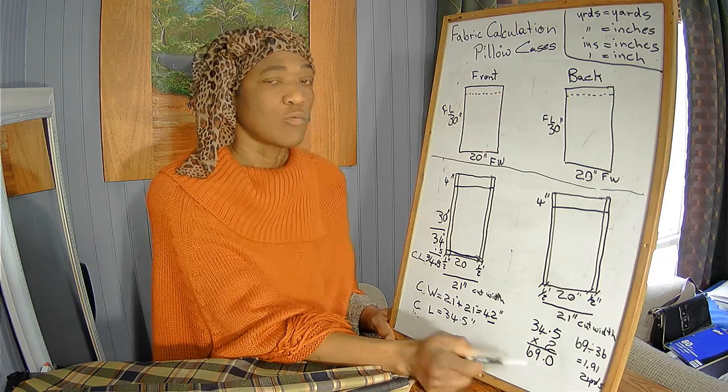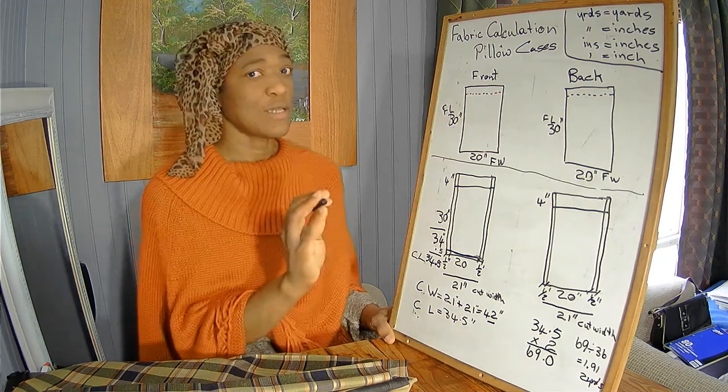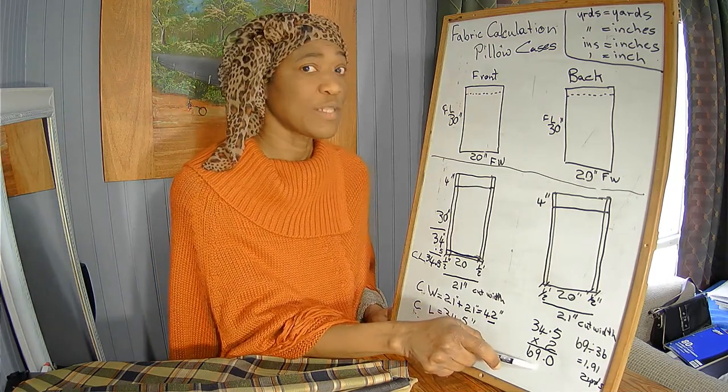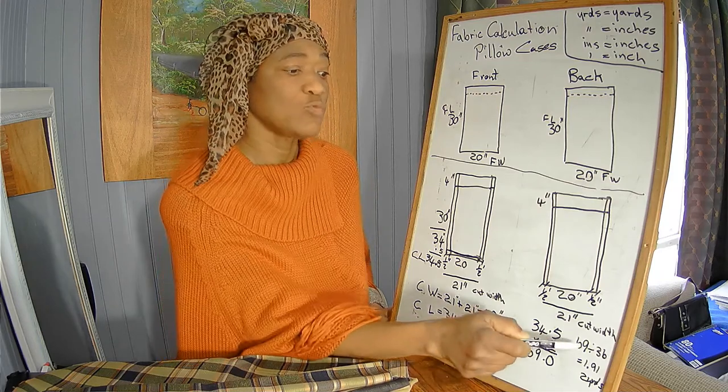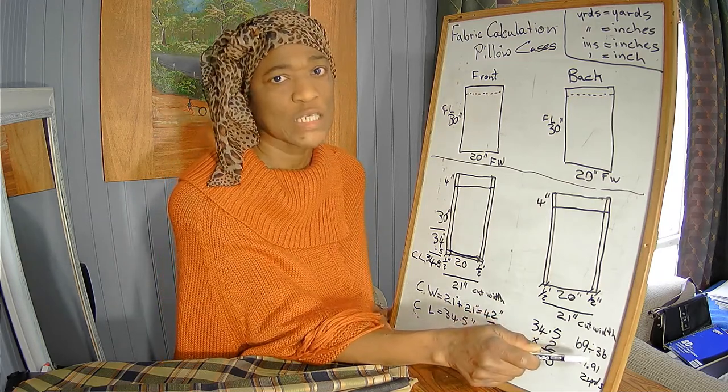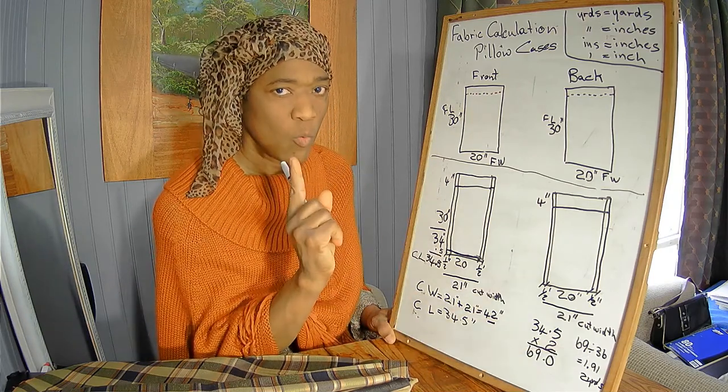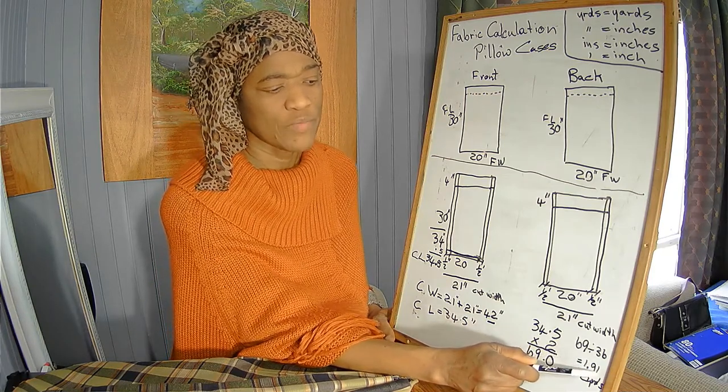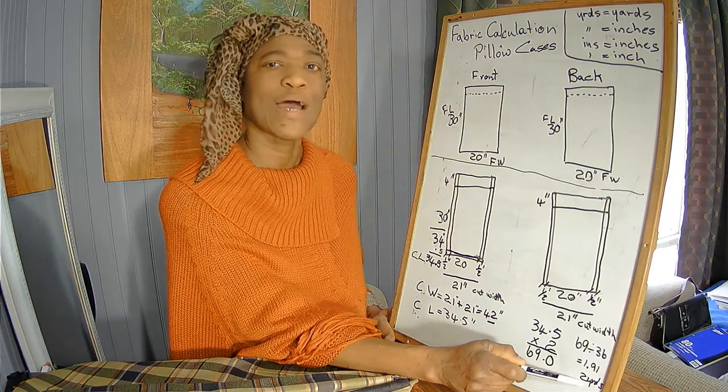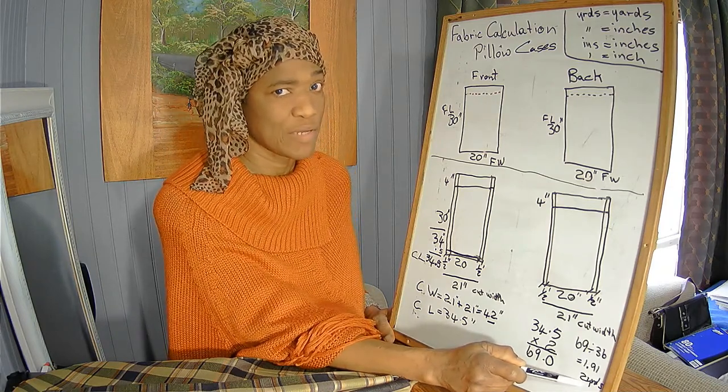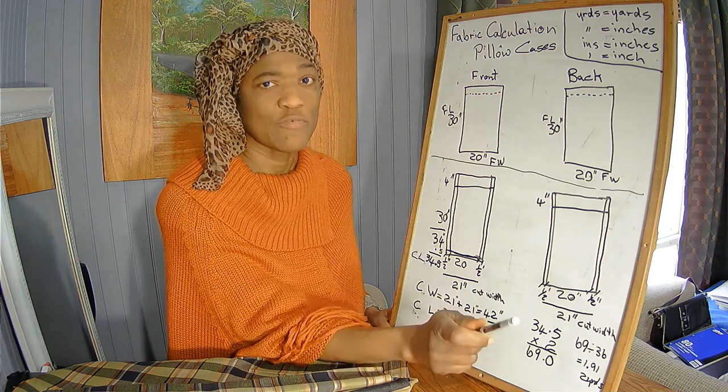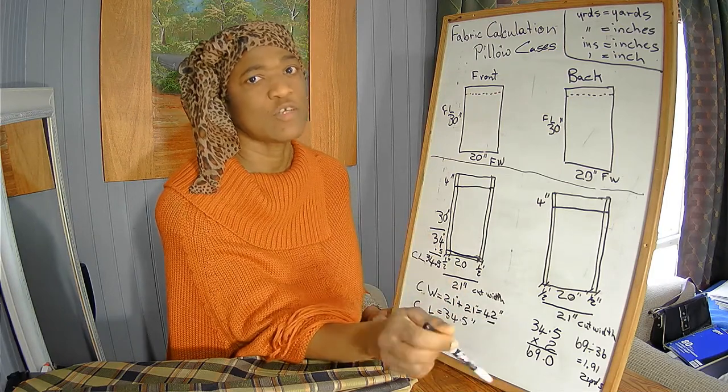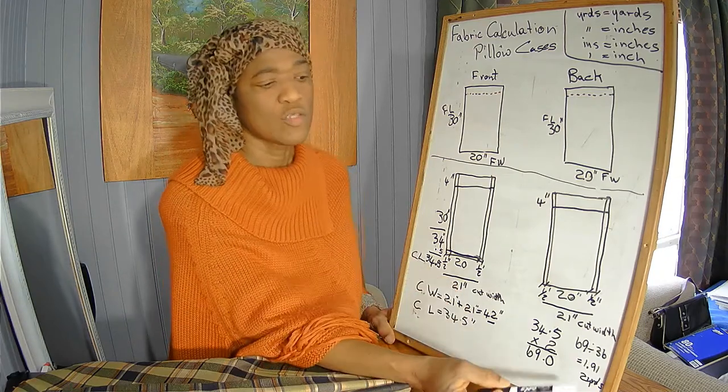What we do is we take our 34.5 inches and multiply by two because we need two pillowcases, and we get 69 inches. When we go to the store, we're buying fabric in yards, not inches. So in order to find out how many yards we will need, we take this 69 inches and divide by 36 inches because there are 36 inches in one yard of fabric. So 69 divided by 36 equals 1.91. We round up, so we have two yards of fabric. Always round up when you're measuring for fabric—never round down because you don't want to run short of fabric.